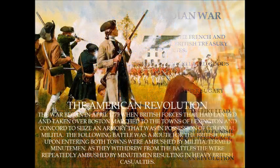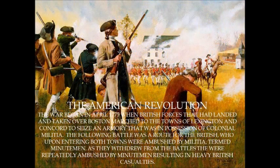The American Revolution began in April of 1775 when British forces that had landed and taken over Boston marched to the towns of Lexington and Concord to seize an armory that was in the possession of the colonial militia. The following battle was a rout for the British, who upon entering both towns were ambushed by militia, termed Minutemen. As they withdrew from the battles, they were repeatedly ambushed by Minutemen, resulting in heavy British casualties.